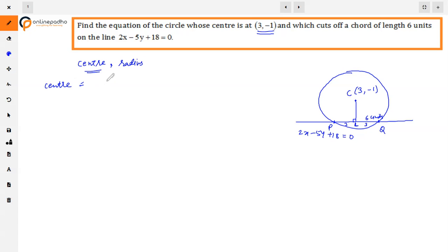Here is the center at (3, -1). Draw CL perpendicular on PQ. And here is the PQ, that is 6 units. And CL bisects. Therefore, PL and LQ are 3 units.